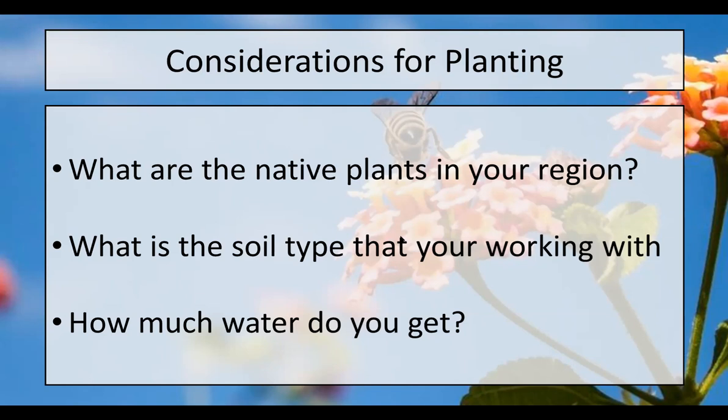And of course, the last consideration is how much water do you get? Do you get a decent amount of rain? Are you near a wetland or a localized water source like a pond or lake, or do you get very little rain at all? In some areas of the country, you may only get rain at certain times of year. Choose plants that are going to be able to not just survive but thrive in the environment you put them in. And yes — how much sun versus shade are you getting is also a very good point.